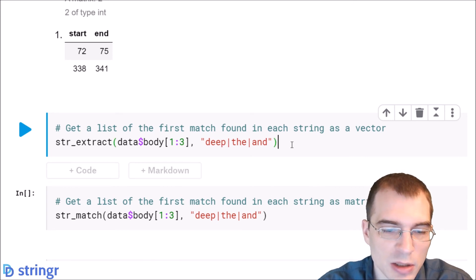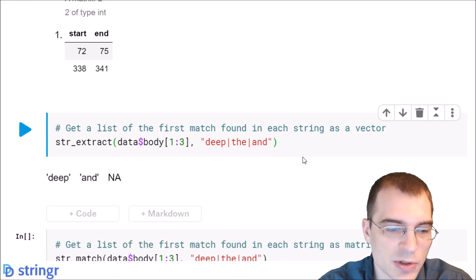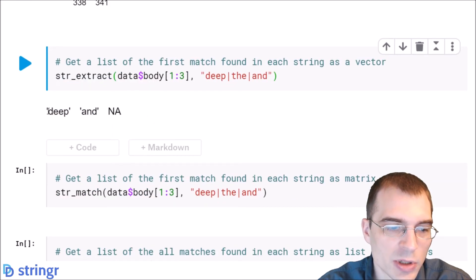But back to str_extract, we'll run this and see what the first occurrence was in each of these first three posts. So the word deep occurred first in the first post, and occurred first in the second post. And in the third post actually, none of these three words occurred. So this pattern wasn't matched at all.